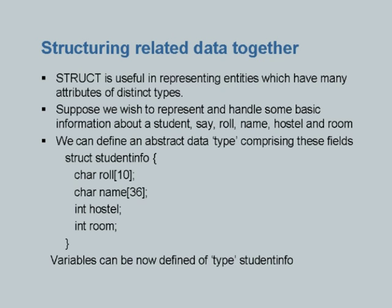A structure can be viewed as an abstract data type — just like you have integer or floating point, you can have some structure. Here is an example: struct student_info. So student_info is not the name of a variable; student_info is the name of a structure. We define that student_info will consist of the following parts, described within curly brackets. For example: char role[10] — this can house a roll number of up to 9 characters.